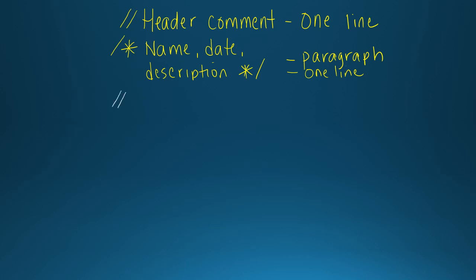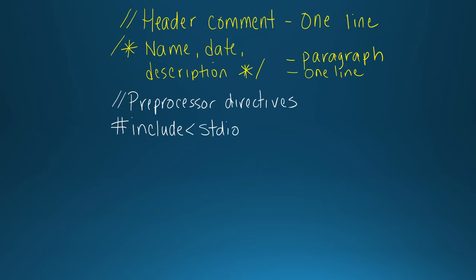After the header comment, there will be pre-processor directives. Pre-processor directives are things that tell your computer and your program what is needed to make your program work. One pre-processor directive that will be in every program you do in this class is `#include stdio.h`, and this is used so that you can do input and output — meaning you can read from the keyboard and write onto the screen. Without this library, you certainly do not want to have to write that code yourself. There are a couple of other pre-processor directives which I will show you in the next slide.